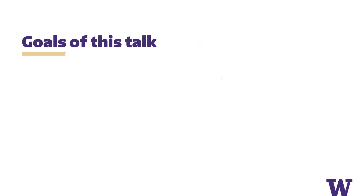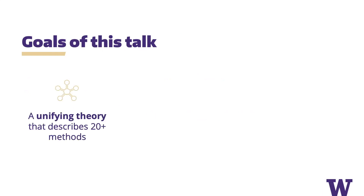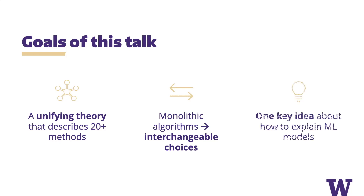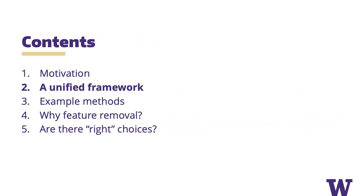With this talk, we're going to try to fix some of those problems. The first thing we'll discuss is a new unifying theory that connects more than 20 existing methods — we'll see that they have a lot of shared elements, and then we'll talk about why those shared elements make sense. Through this new perspective, instead of seeing complicated, monolithic algorithms in each explanation method, you'll see that they're actually very similar methods composed of different but interchangeable choices. The key idea is understanding the importance of features by removing their influence and seeing how model behavior changes.